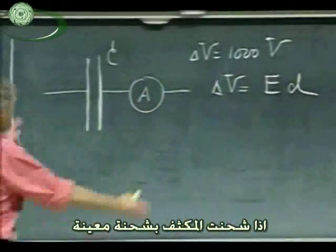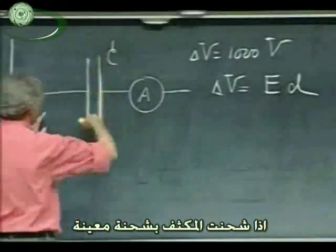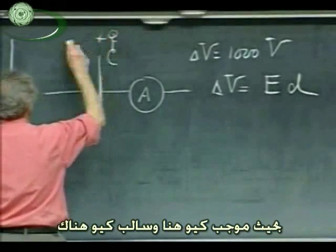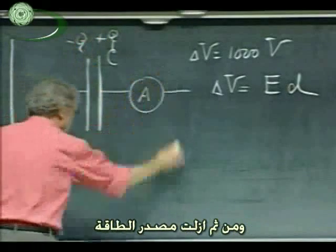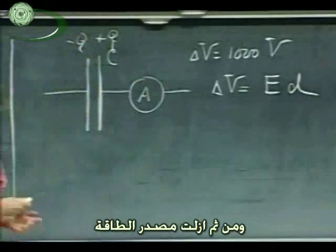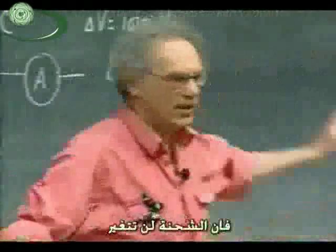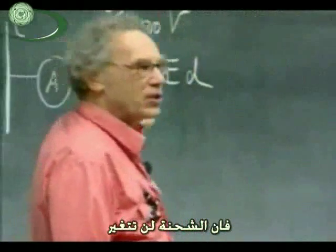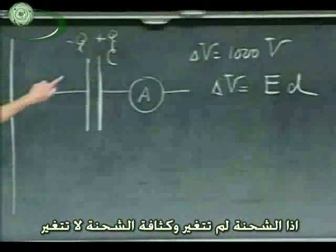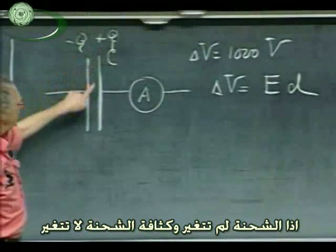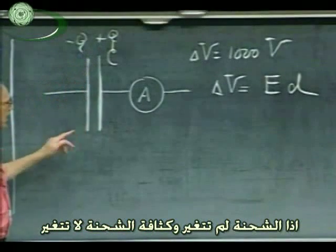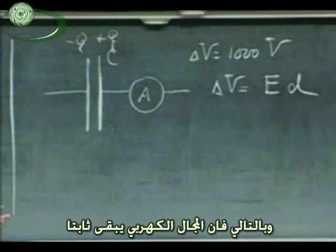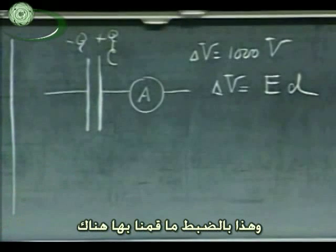If I charge the capacitor up with a certain charge — there is plus Q here and minus Q there — and then I remove the power supply, it's no longer there. That charge is trapped; that charge can never change. So if the charge doesn't change, the charge surface density doesn't change, and so the electric field inside remains constant — exactly what we discussed.